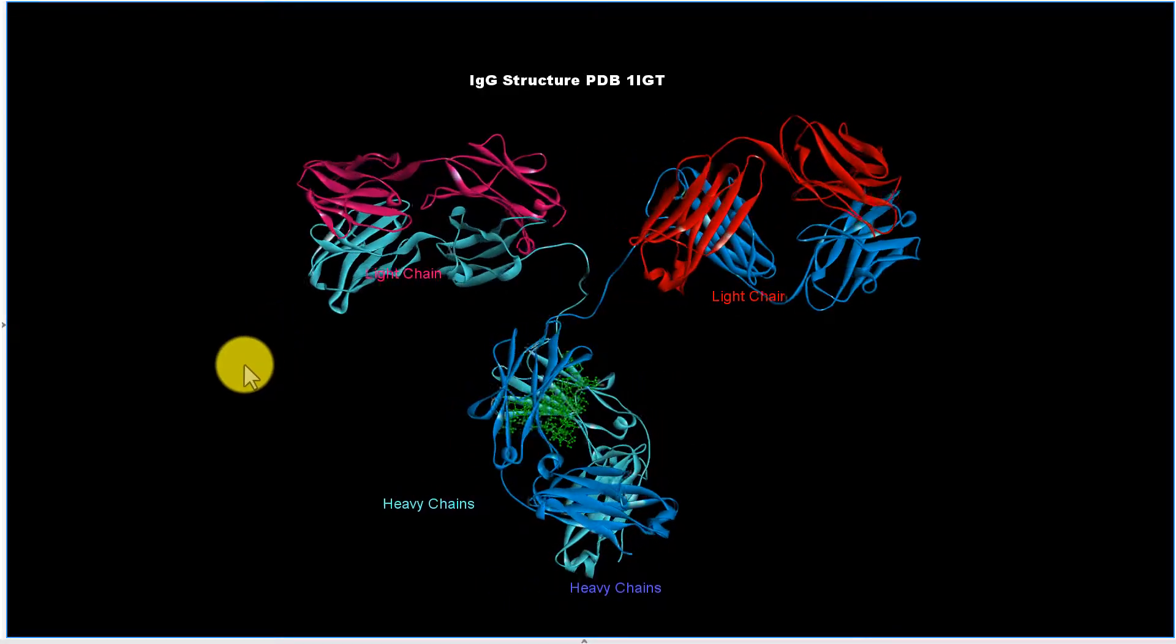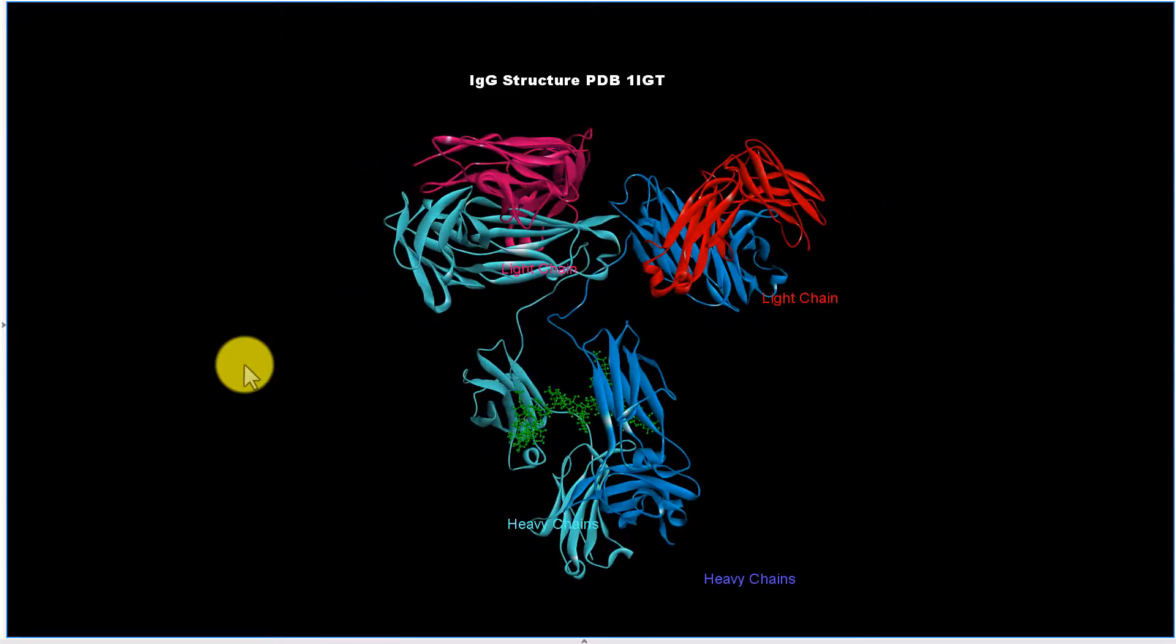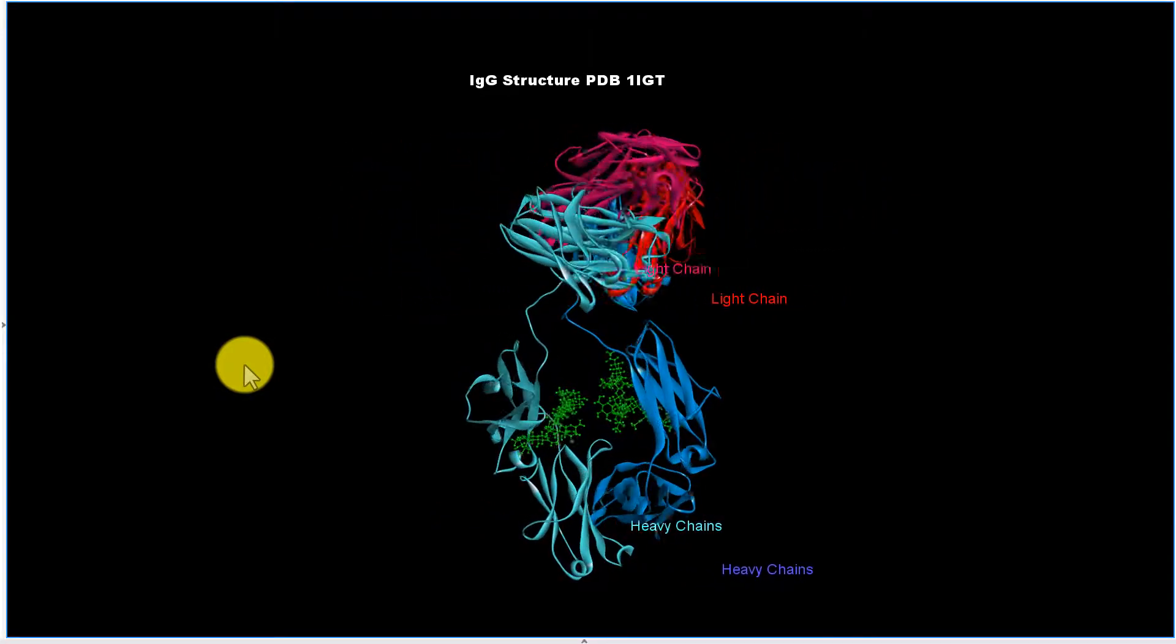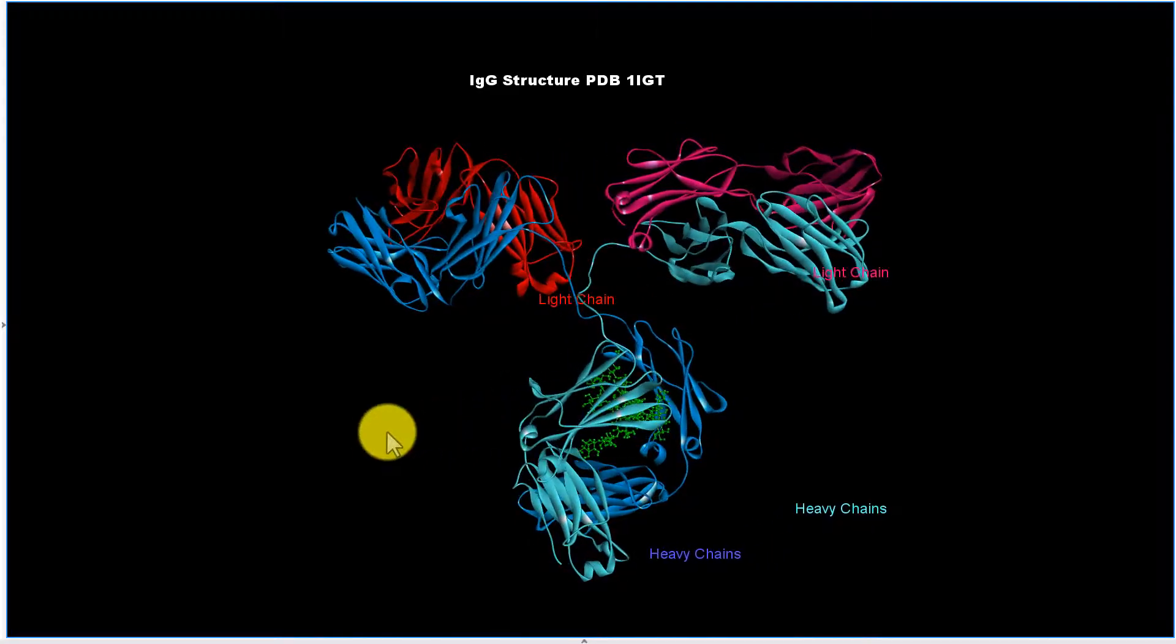This is the structure of an IgG molecule. It has two heavy chains in blue and two light chains in different colors of red, and then it has carbohydrate in the middle here in green that's attached to the heavy chains.